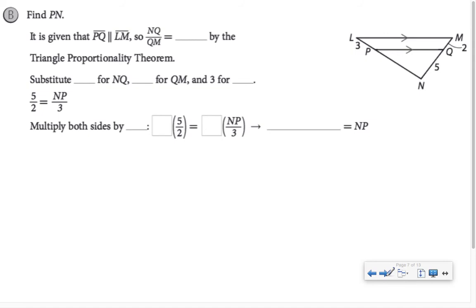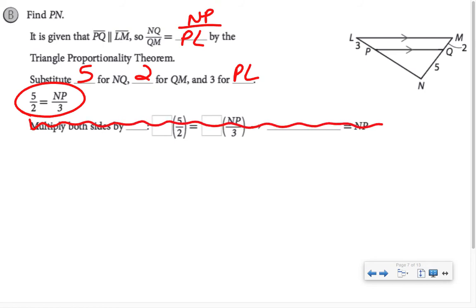Similar example: we're given that PQ is parallel to LM, so NQ is to QM as NP is to PL by the triangle proportionality theorem. We're substituting our values: 5 for NQ, 2 for QM, and 3 for PL. From what I've seen, most of you are more comfortable with cross-multiplying to solve. So we have 15 equals 2 times NP. Divide both sides by 2, and the length of NP is 7.5.